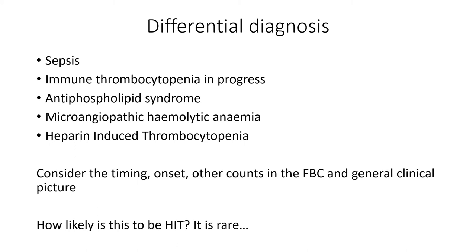The differential diagnosis for rapidly dropping platelets in this kind of situation: I'd be thinking about sepsis, ITP, and antiphospholipid syndrome — especially if there's a prothrombotic state, which would be an important one to exclude. Microangiopathic haemolytic anaemias can present with a drop in platelets and new clots, but we're not really seeing much in the way of a haemoglobin drop. And of course, heparin-induced thrombocytopenia. You need to consider the timing, the onset, the other counts in the full blood count, and the general clinical picture. My suspicion of HIT would be less if the patient was floridly septic with CRPs in the hundreds, or if there were markers of microangiopathic anaemia on the blood film. So you need to look at the whole clinical picture — and bear in mind, it is relatively rare.